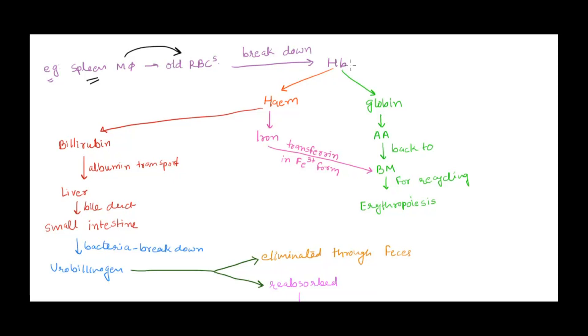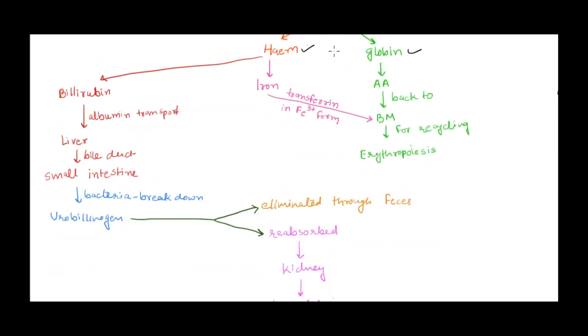One beautiful thing about RBC destruction is the body tries to recycle as much as possible from its breakdown products. It won't let anything go to waste. Once the RBC is broken down, it liberates lots of hemoglobin. This hemoglobin breaks down into heme plus globin.